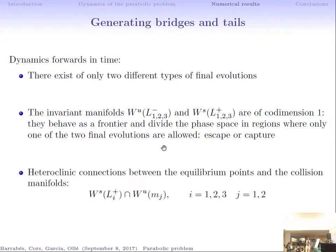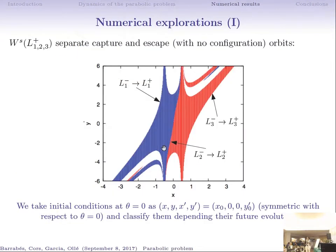Now let's see how bridges and tails are generated. The stable manifolds of the collinear equilibrium points, forward in time, are of co-dimension one. There are heteroclinic connections between these stable manifolds and the collision manifolds of the primaries. The stable manifolds separate different kinds of dynamical behavior.